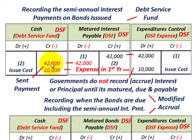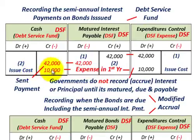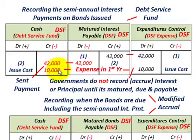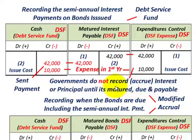We also have to deal with bond issuance costs. Say there were $10,000 in issuance costs — in both cases, whether bonds are issued at a discount or premium, you expense these costs in the first year of the bond. You credit cash for $10,000 and debit expenditures control for $10,000. The key principle is: under modified accrual accounting in governmental accounting, you do not accrue interest or principal until it's matured, due, and payable.